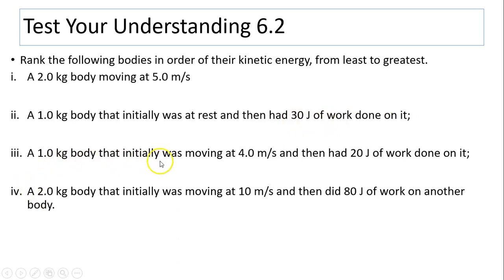A 1.0 kg body that initially was moving at 4.0 m/s and then had 20 J of work done on it. Or a 2.0 kg body that initially was moving at 10 m/s and then did 80 J of work on another body. So what we have to do is to figure out each kinetic energy for each one and then compare them.